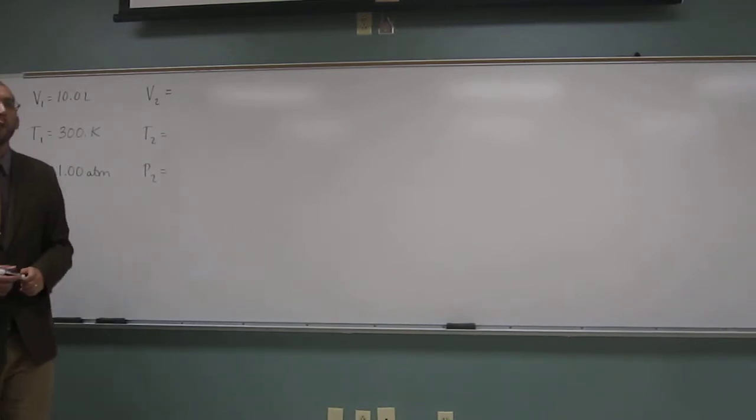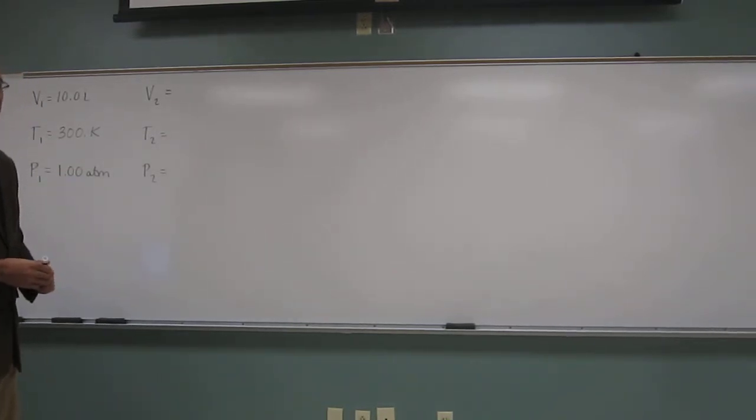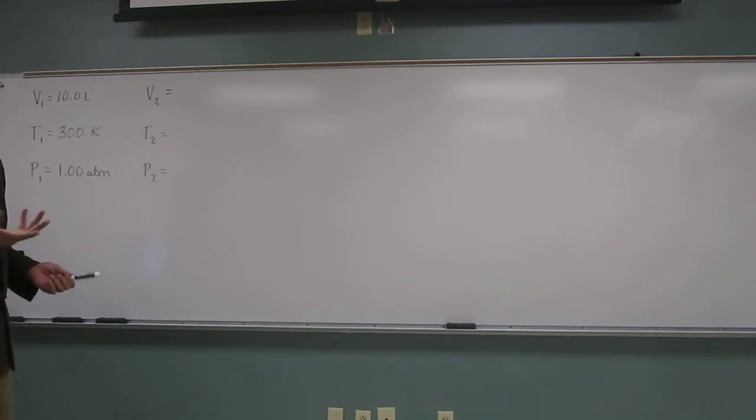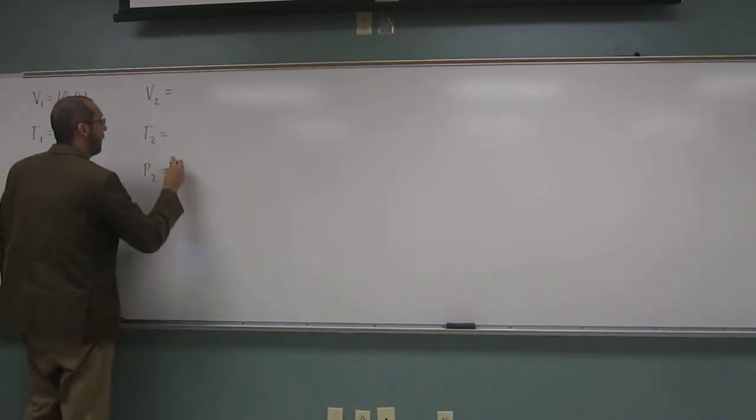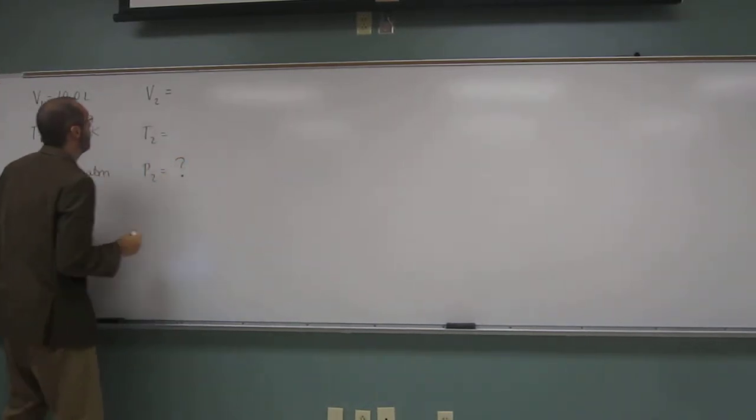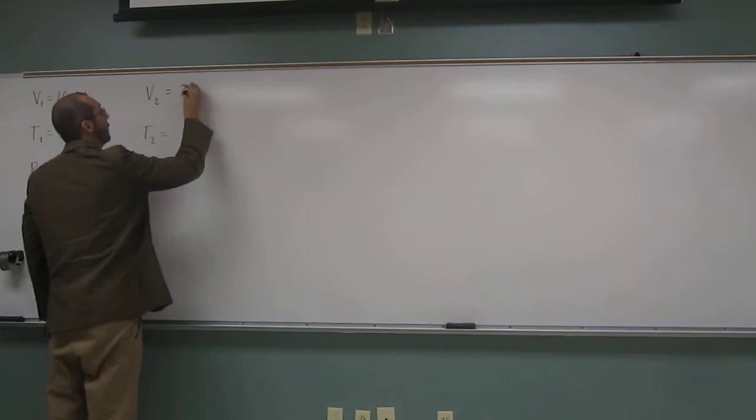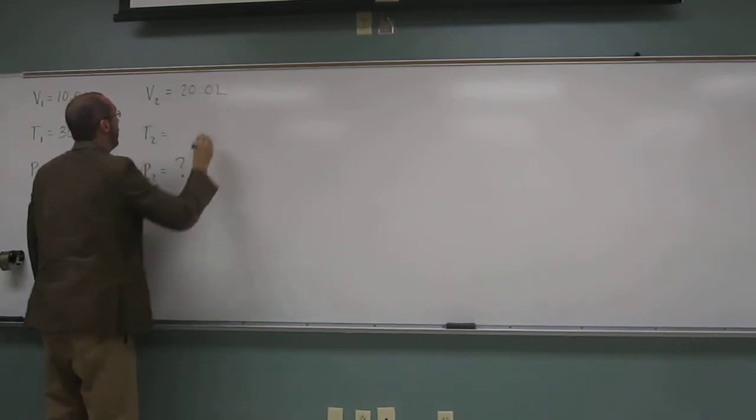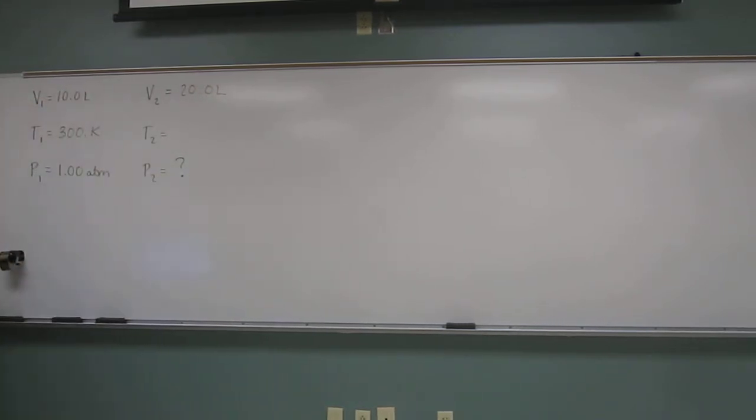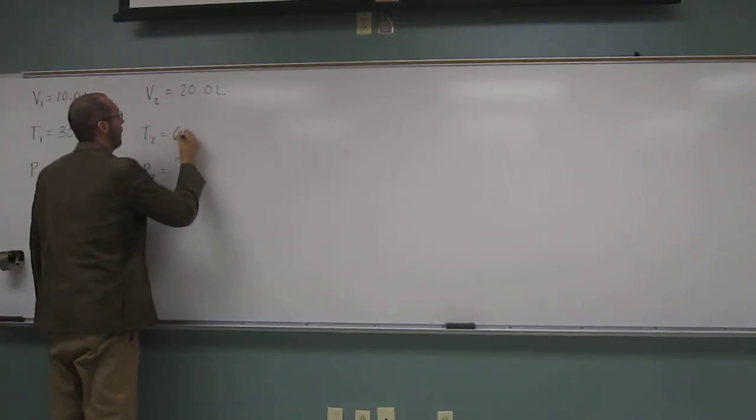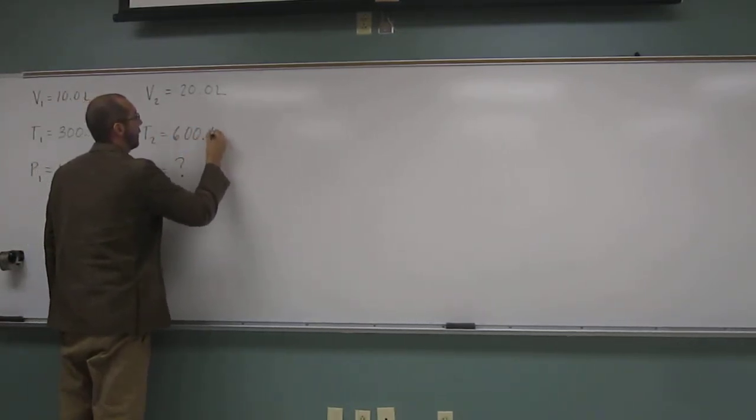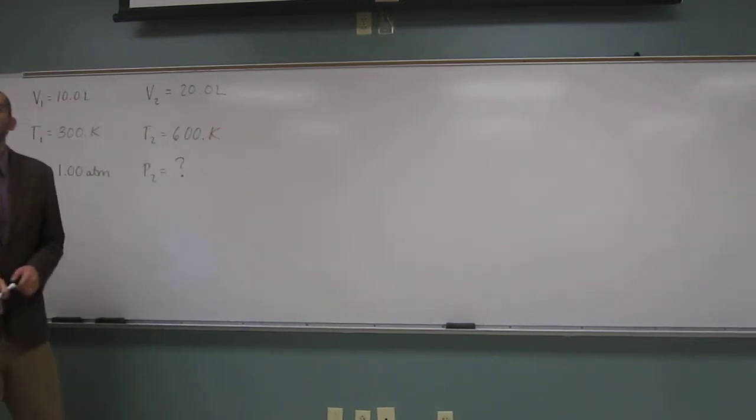Okay, so what are we looking for in this one? Pressure 2, right, P2. And it says that we're going to double the volume. So what would the new volume be? 20 liters, right, 20.0 liters. And the new temperature is also going to be doubled. So what would that be? 600 Kelvin. And remember, we've got to put that dot there to make sure we know that it's three significant figures.